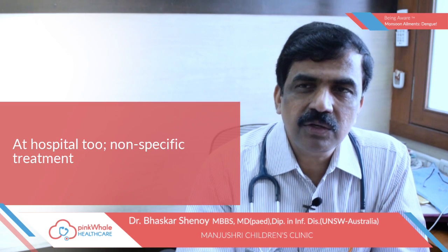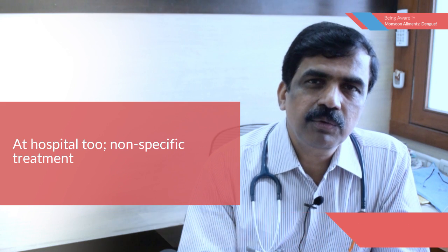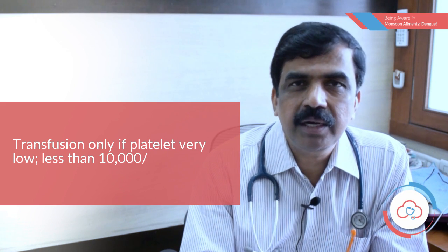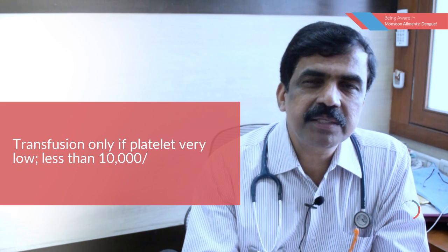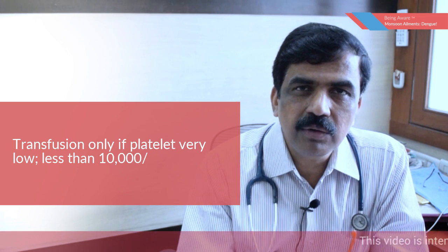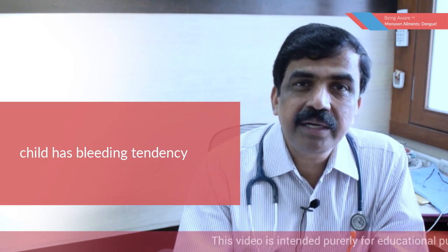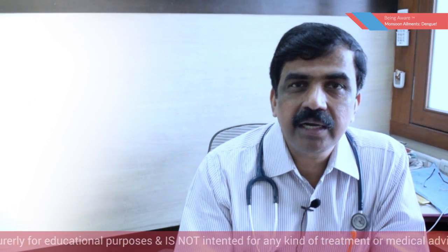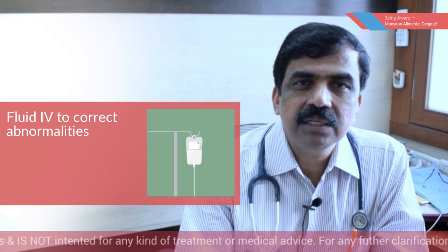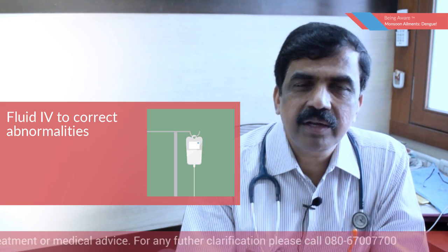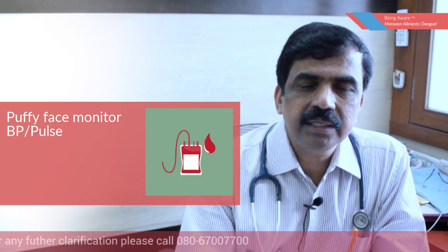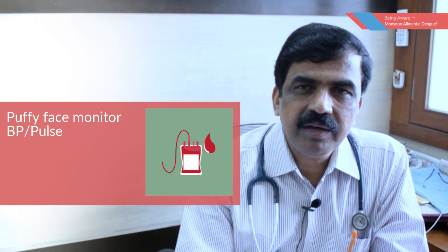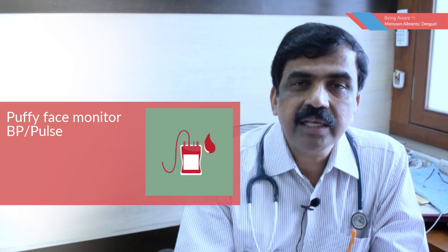In the hospital, even after admission, we do not have any specific medicine. If the platelet is very low, then only we give platelet transfusion. Otherwise, no platelet transfusion is given even if the platelet is below 10,000. There are certain specific criteria for when to give platelets — if the platelet is less than 10,000 or the child has bleeding tendencies, then only we give it. Routinely, just because of low platelet count, never expect the doctor to give platelet transfusion. We also give IV fluids to correct any abnormalities and monitor blood pressure, pulse, and other vitals, correcting them whenever they are abnormal so that further complications do not occur.